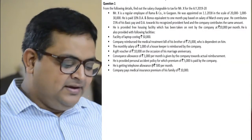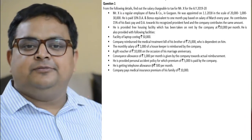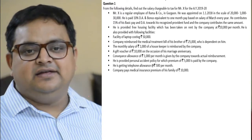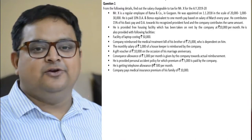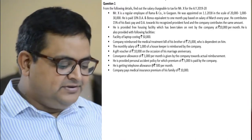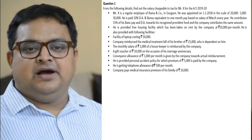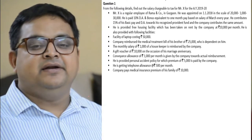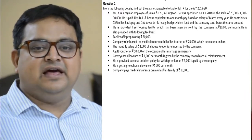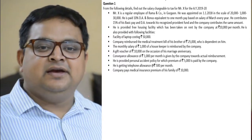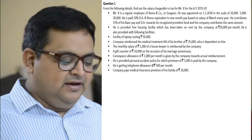He is paid 10% Dearness Allowance. If DA is given as a percentage, it is always calculated on basic salary. So whatever our basic salary is, we will make a working note for it, and his DA will be 10% of that. If in any question you need to calculate rent-free accommodation or retirement benefits, be careful — DA can have two roles: DA forming part of retirement benefits.